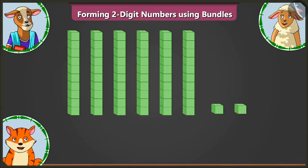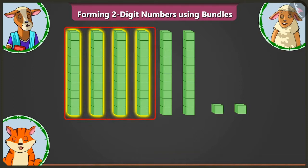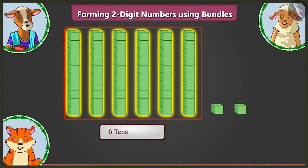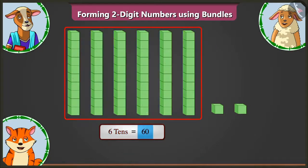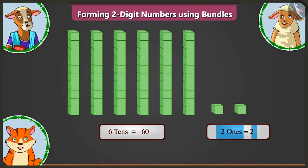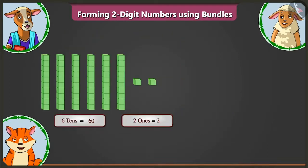Similarly, there are one, two, three, four, five and six groups of ten blocks each. So, six tens makes 60. Now, there are two small blocks, which means there are two ones. Very good.